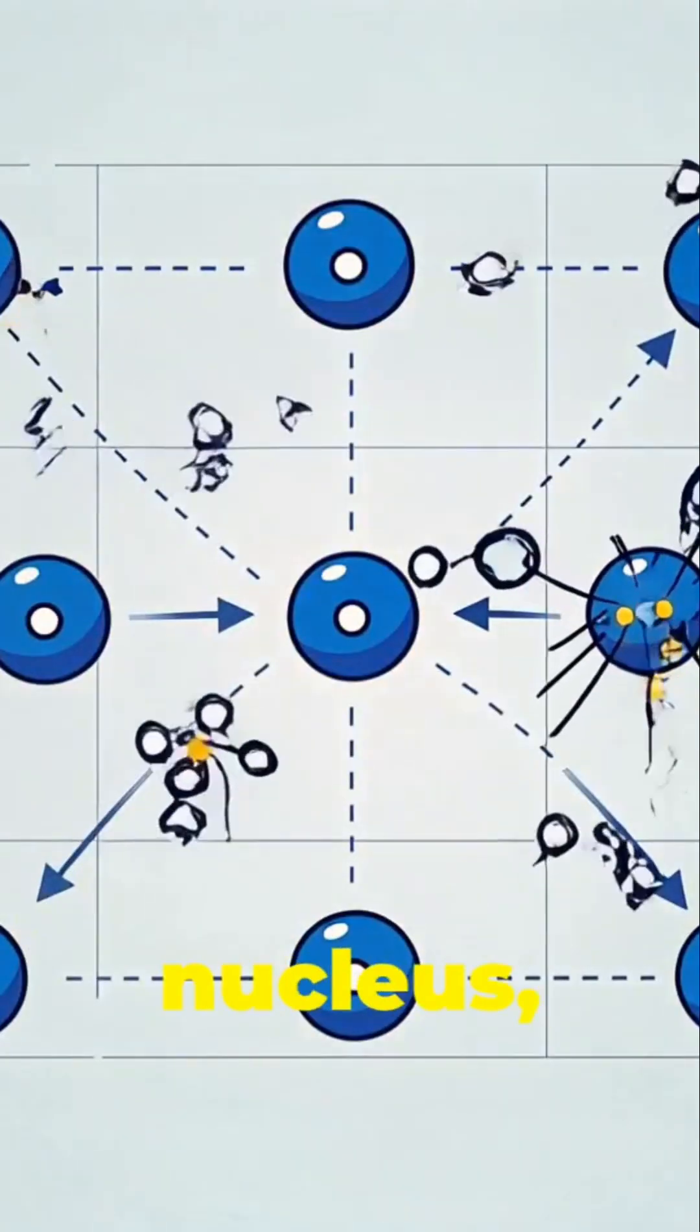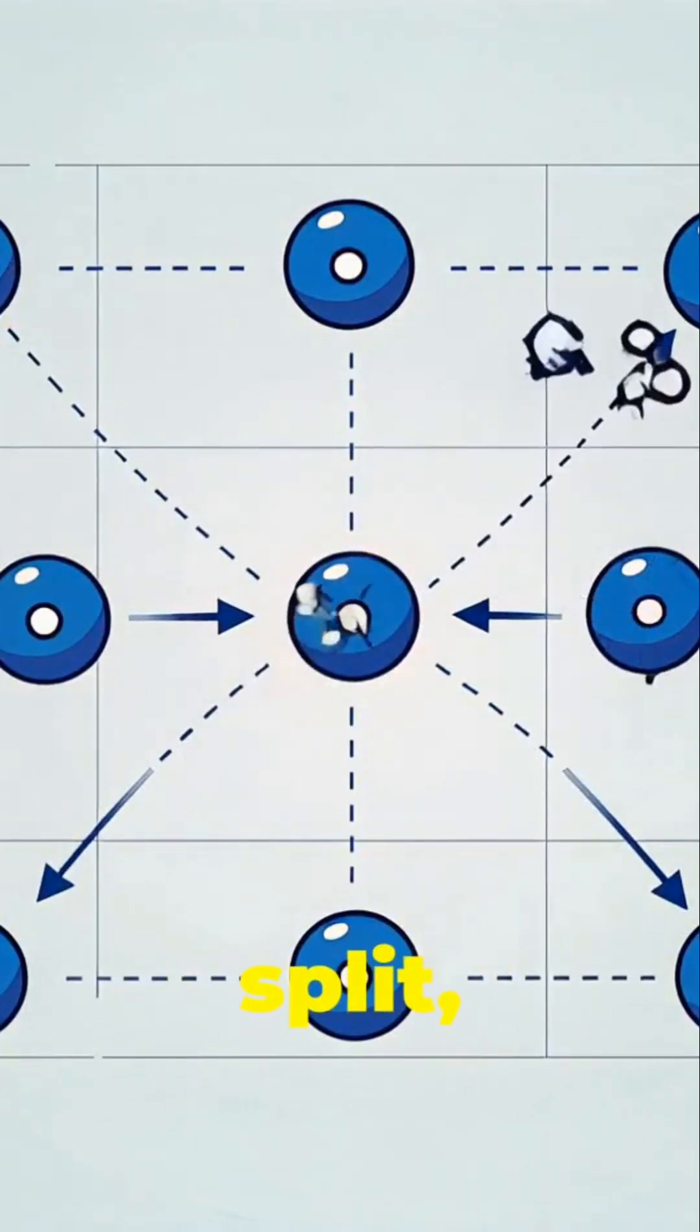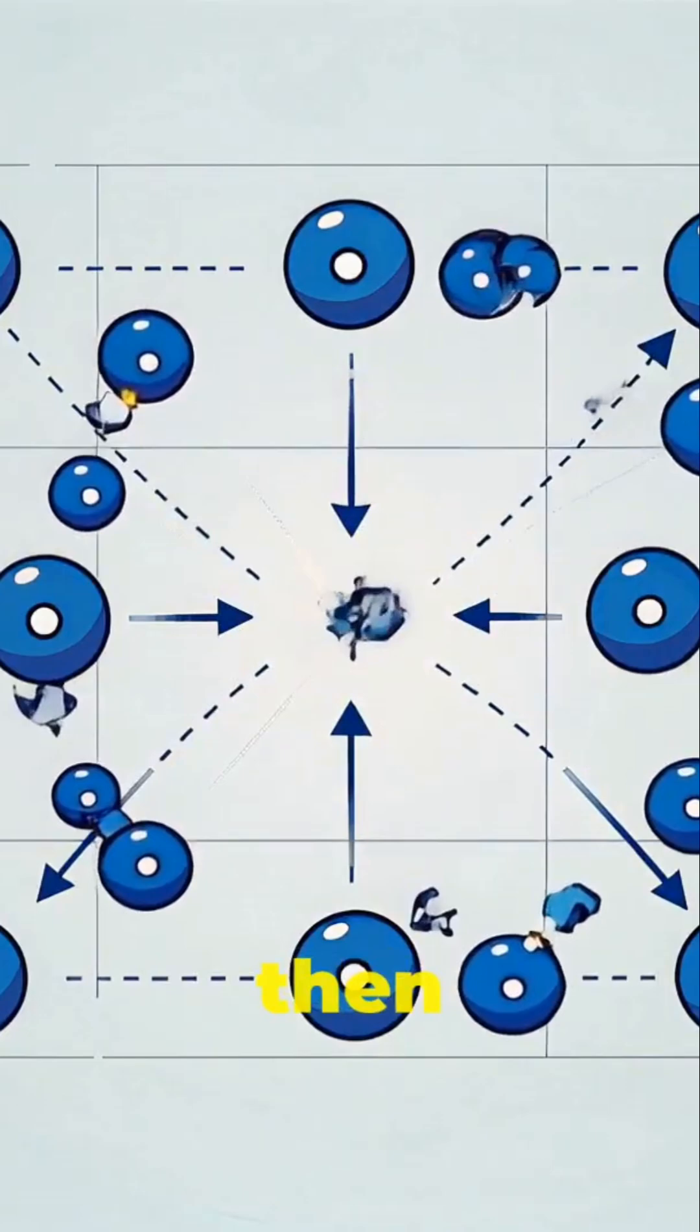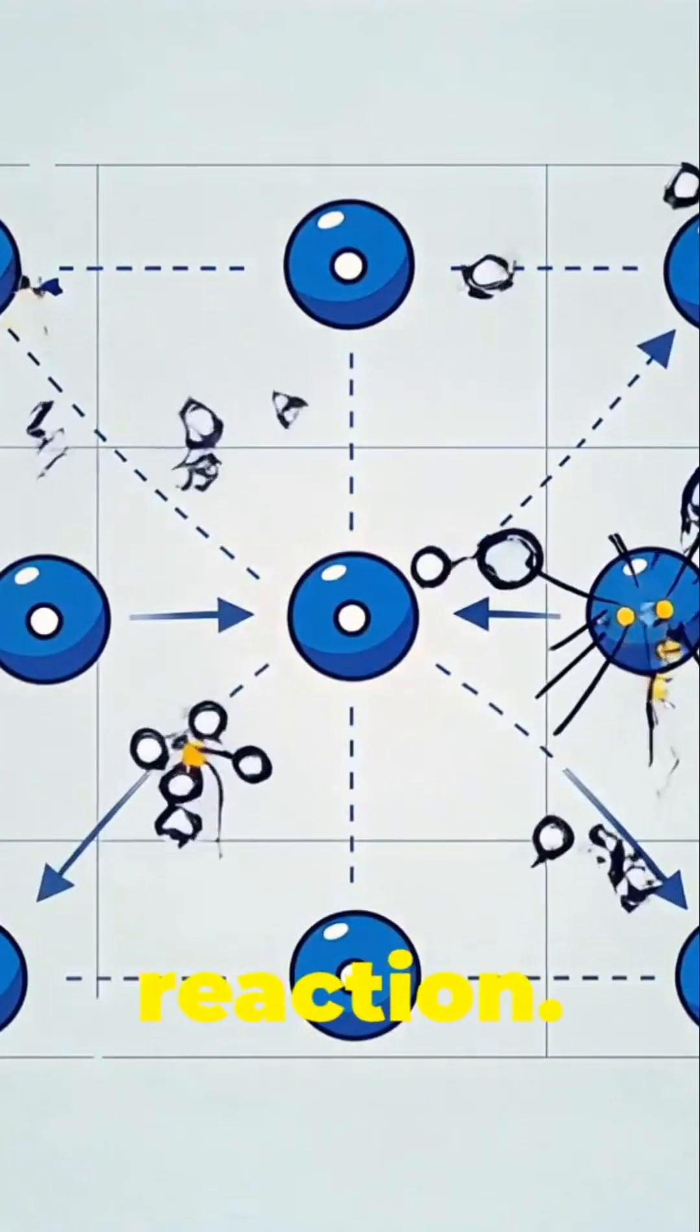When a neutron hits the nucleus, it causes the atom to split, releasing more neutrons and a burst of energy. These neutrons can then trigger more fission events, creating a chain reaction.